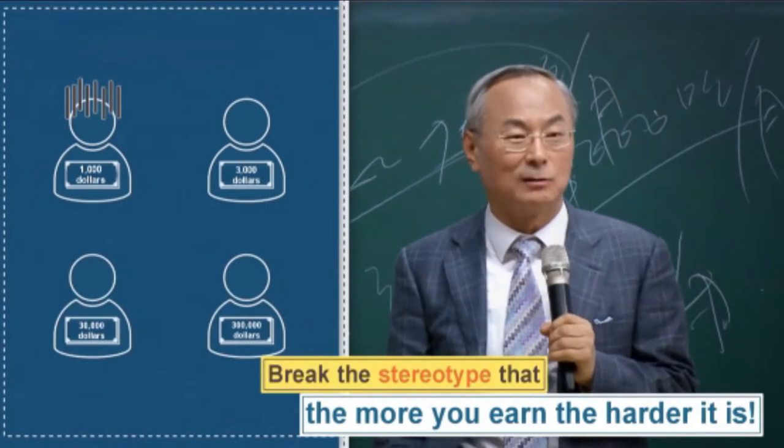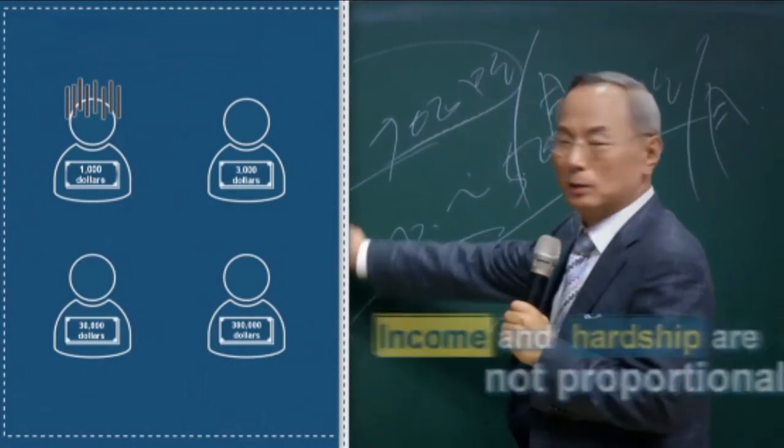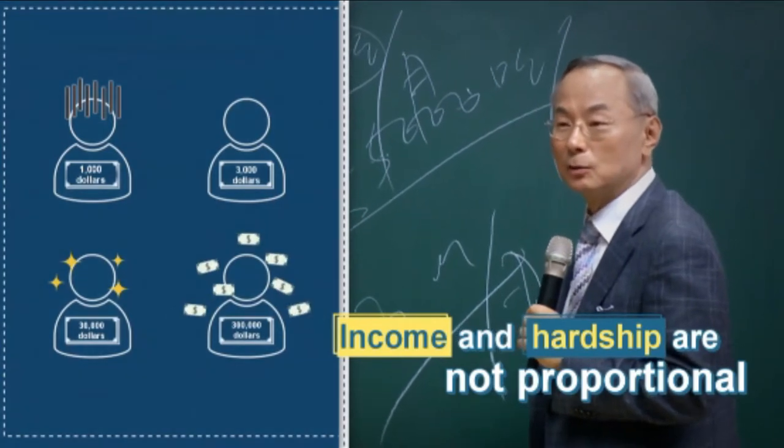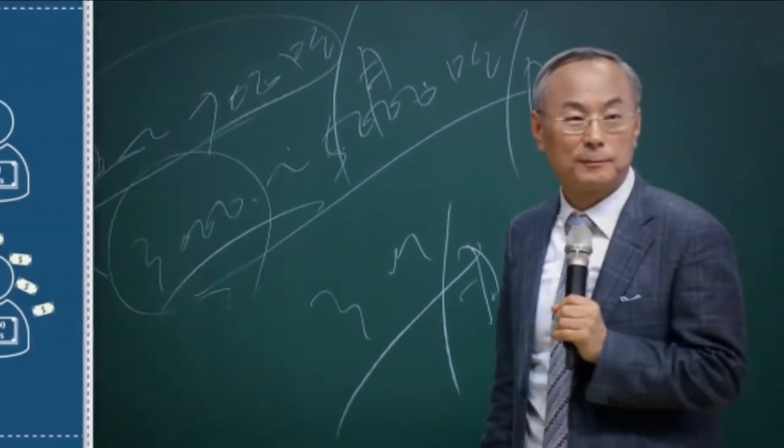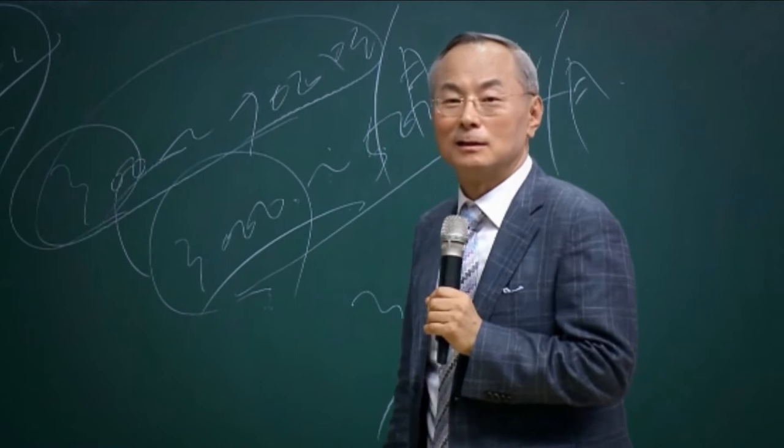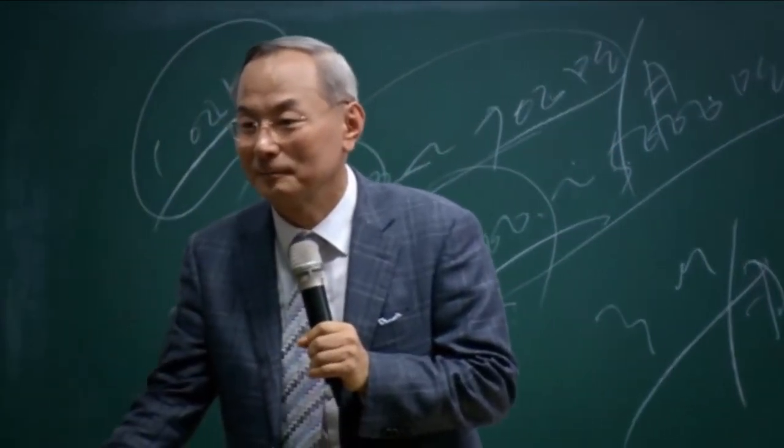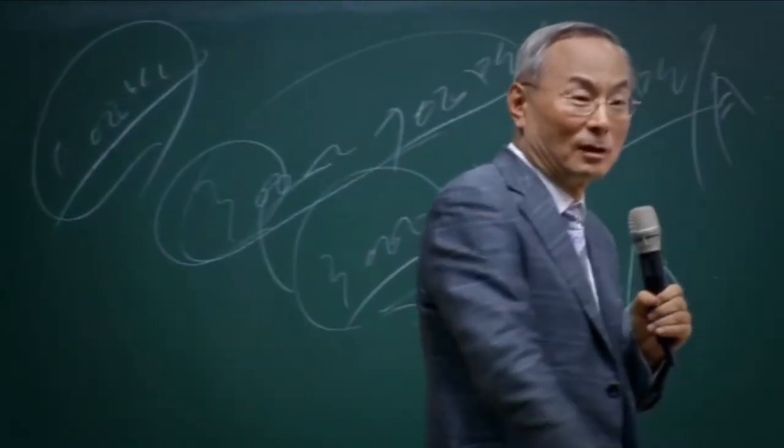And the thirty thousand earners say that making money is easy. Someone who makes three hundred thousand a month says money is everywhere. So the less money you make, the harder it is. The less you earn, the harder it is.